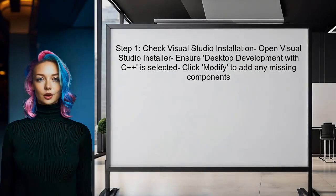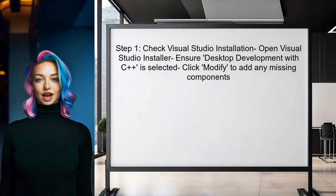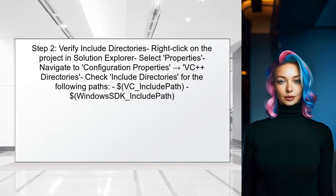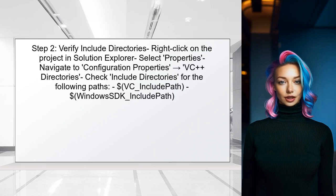To resolve the issue with the missing stdio.h file, first check if the Visual Studio installation includes the necessary components for C++ development. Next, verify the include directories in the project settings. This ensures that the compiler knows where to find standard library files like stdio.h.